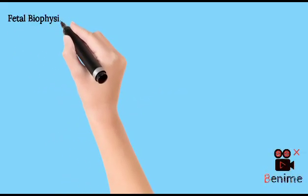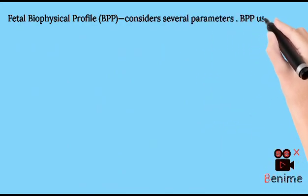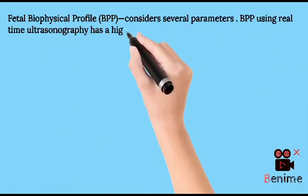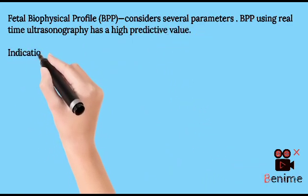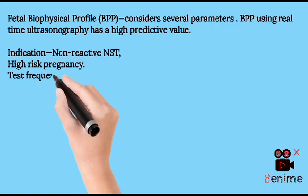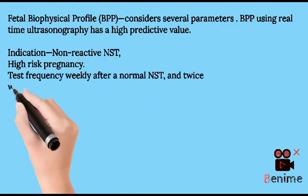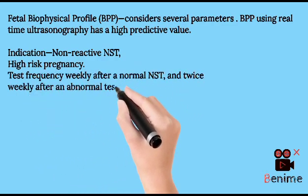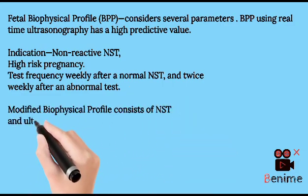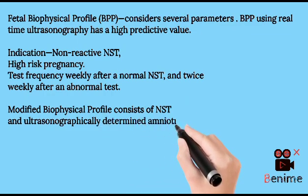The fetal biophysical profile (BPP) considers several parameters. BPP using real-time ultrasonography has a high predictive value. Indications include a non-reactive NST and high-risk pregnancy. Test frequency is weekly after a normal NST and twice weekly after an abnormal test. The modified biophysical profile consists of NST and ultrasonographically determined amniotic fluid index (AFI).